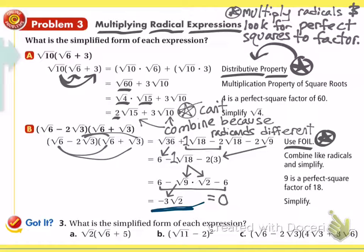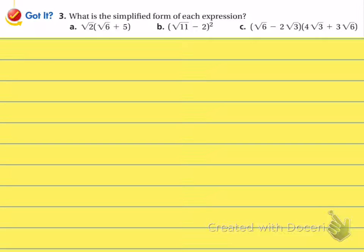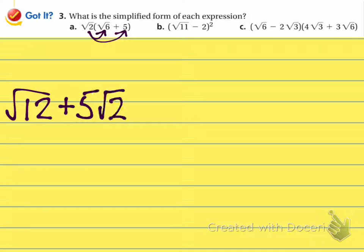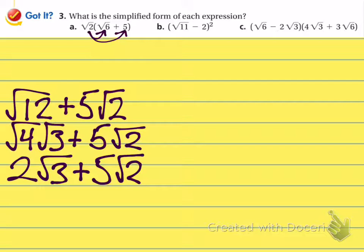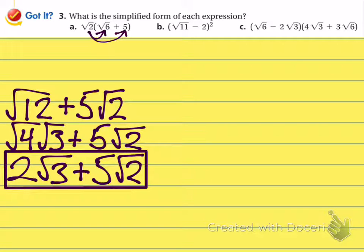You will not understand how to foil radicals until you start doing it on your own. Pause the video and work out these practice problems. In problem A, distribute radical 2: radical 2 times radical 6 is radical 12, and radical 2 times 5 is 5 radical 2. Radical 12 becomes radical 4 times radical 3, and radical 4 becomes 2. Because radical 3 and radical 2 are not the same radicand, the final answer is 2 radical 3 plus 5 radical 2 — we cannot simplify 3 or 2 any further.